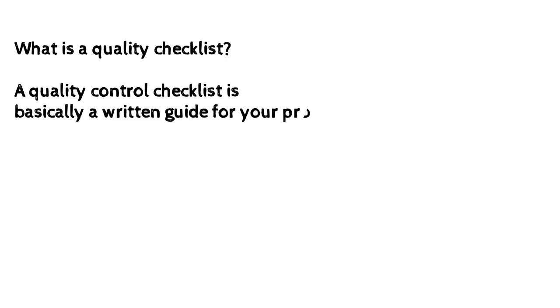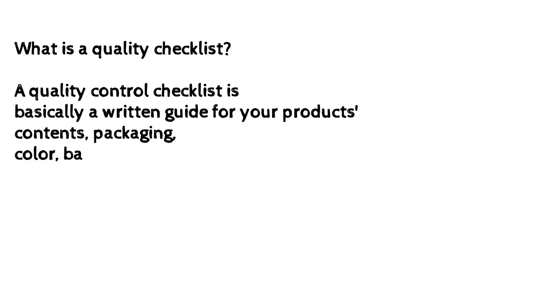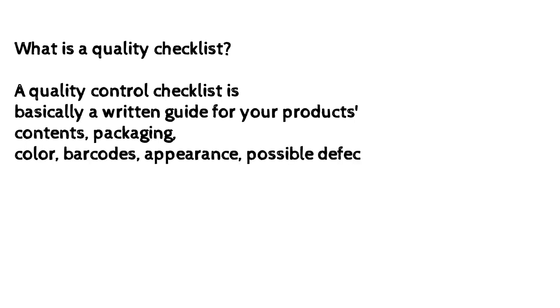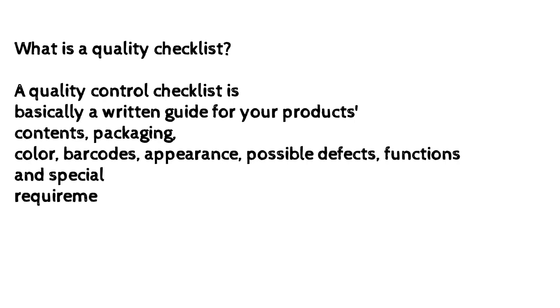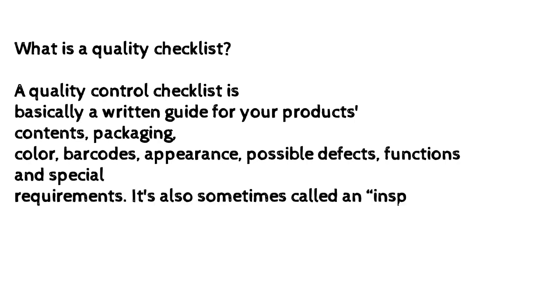What is a quality checklist? A quality control checklist is basically a written guide covering your product's contents, packaging, color, barcodes, appearance, possible defects, functions, and special requirements. It is also sometimes called an inspection criteria sheet or inspection checklist.